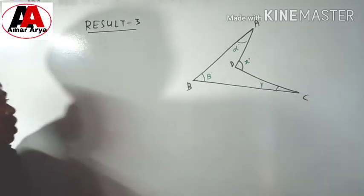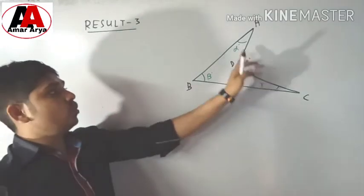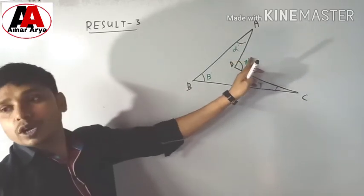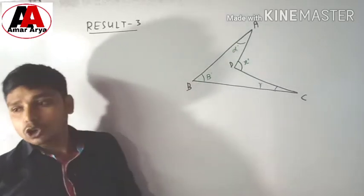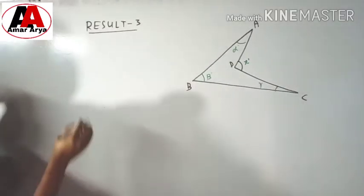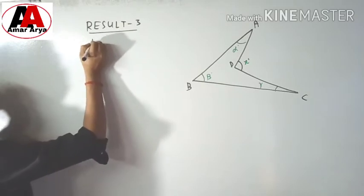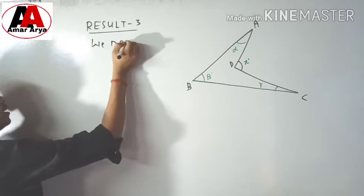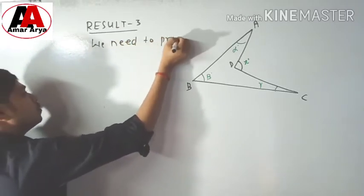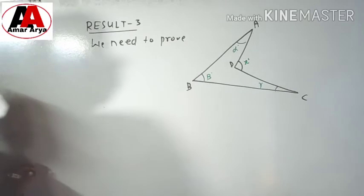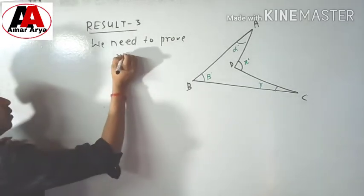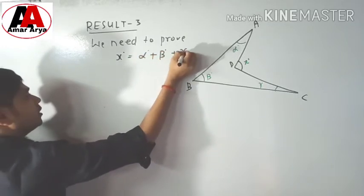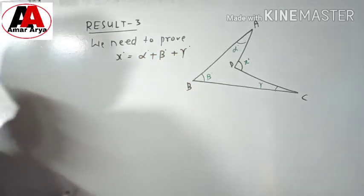Now you will have to prove that X equals alpha plus beta plus gamma. We need to prove result number three: angle X equals alpha degrees plus beta degrees plus gamma degrees. That is a very important result.